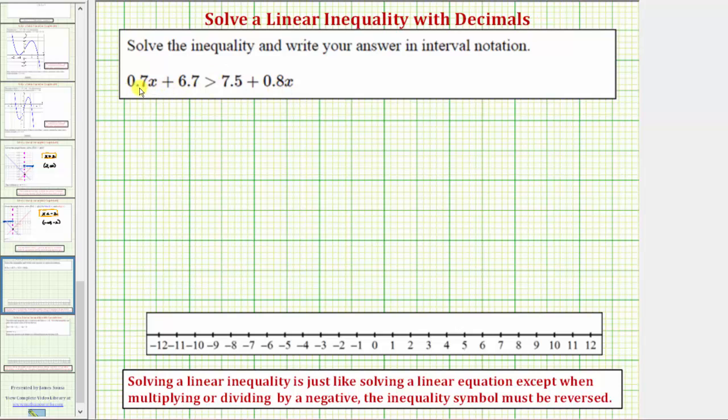So we have the option of working with the decimals or, because the terms contain one decimal place or the tenths place value, we can clear the decimals by multiplying both sides by ten.